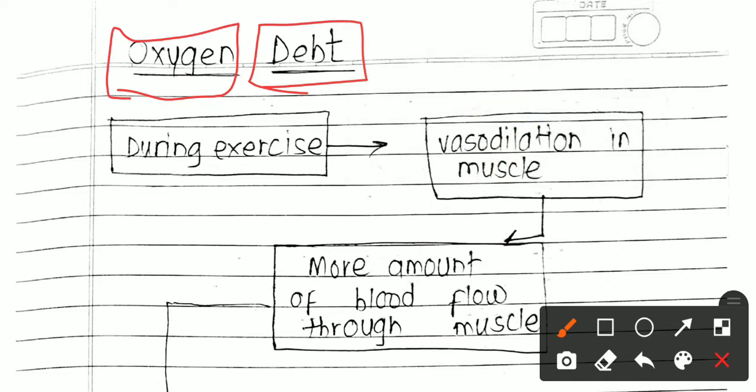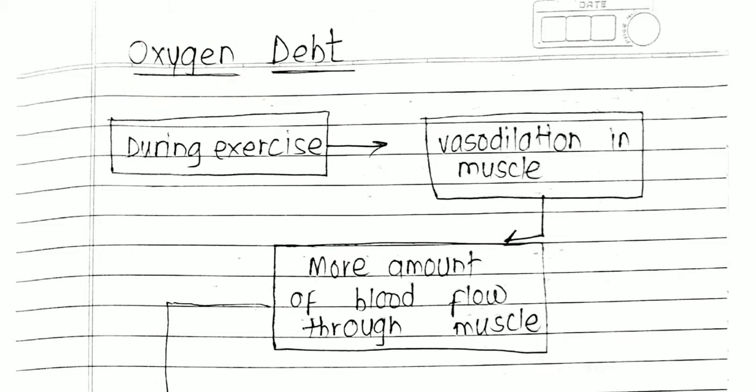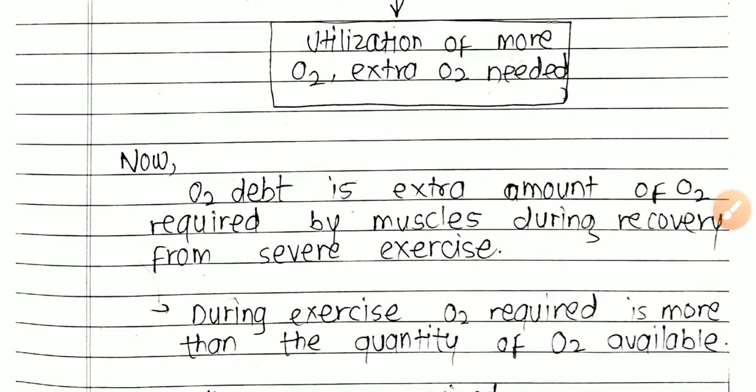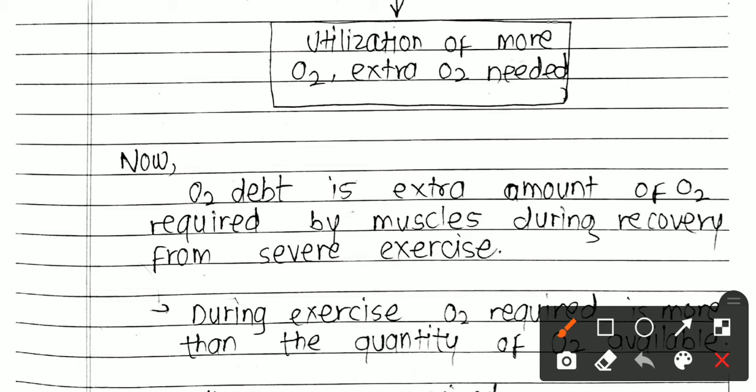You have to repay the oxygen consumed - the extra amount of oxygen consumed. That is oxygen debt. Oxygen debt is the extra amount of oxygen required by muscles during recovery from severe exercise. This oxygen is required for recovery. Focus on that word recovery - it is very important.